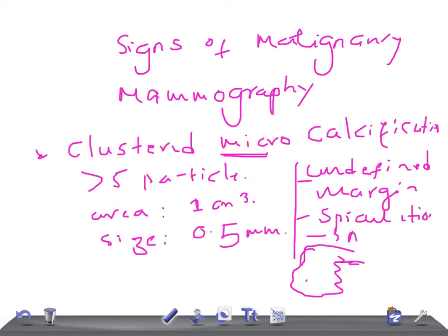Architectural distortion is another important sign. Also note the popcorn pattern of calcification seen in breast fibroadenoma. These are the signs of carcinoma on mammography.